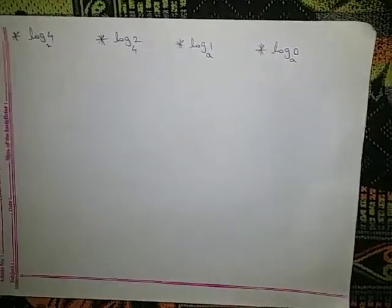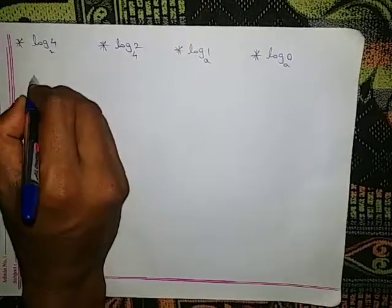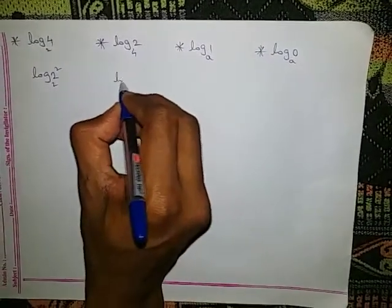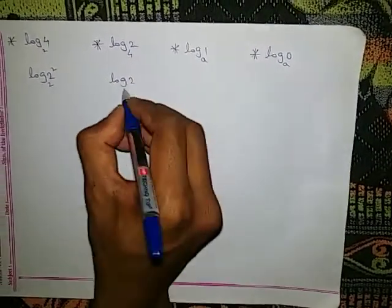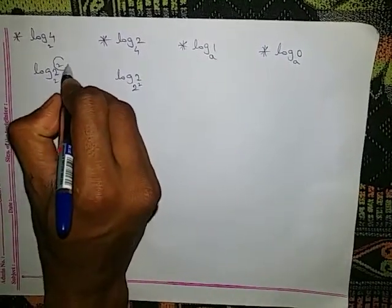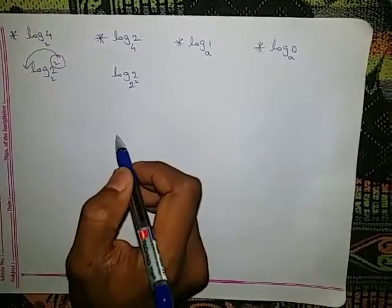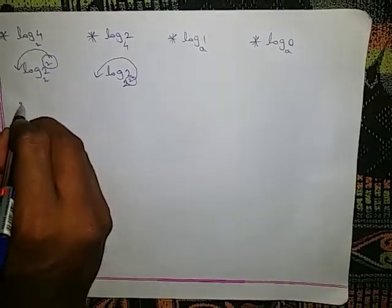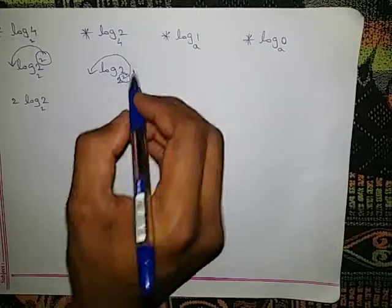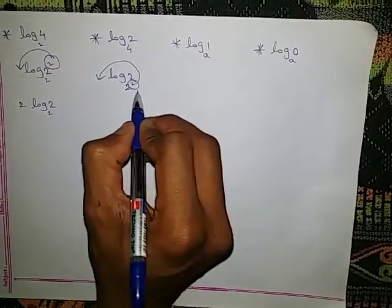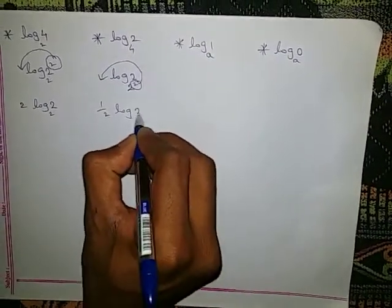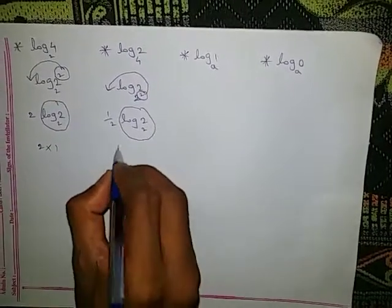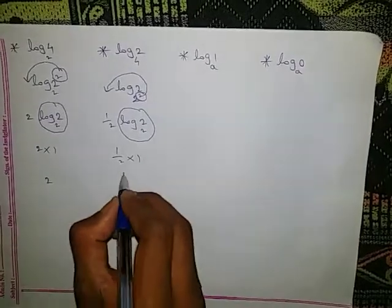Now let us move to logarithms — a very easy topic. Log of 4 base 2 can be written as log 2² base 2. Log of 2 base 4 can be written as log 2 base 2². If the power is for the number, write that power as it is in front — that is 2 log 2 base 2. If the power is for the base, write the reciprocal — that is (1/2) log 2 base 2. Log 2 base 2 = 1, so the first gives 2 × 1 = 2, and the second gives (1/2) × 1 = 1/2.